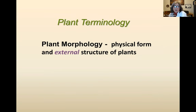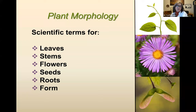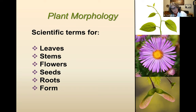When we say plant terminology, what we're really talking about for this class is plant morphology — the physical form and external structure of plants. That includes things like leaves, stems, flowers, seeds, and roots. There are of course lots of other things to know about plants, like internal structures — xylem and phloem, how water moves, and physiology — but specifically tonight we're looking at plant morphology because it's the element of botanical science that you need to know to identify plants properly.